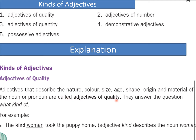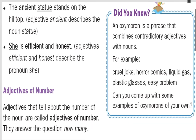Adjectives of quality show the color, size, age, shape, origin, and material — the overall quality of the noun. They answer the question: what kind? For example, 'the kind woman took the puppy home' — the word 'kind' describes what kind of person the woman is. Another example: 'the ancient statue stands on the hilltop' — the adjective 'ancient' describes the noun 'statue'. 'She is efficient and honest' — what kind of person is she? She is efficient and honest.